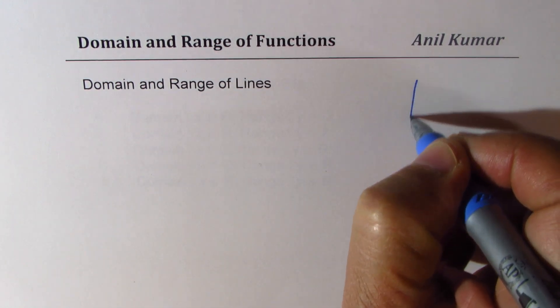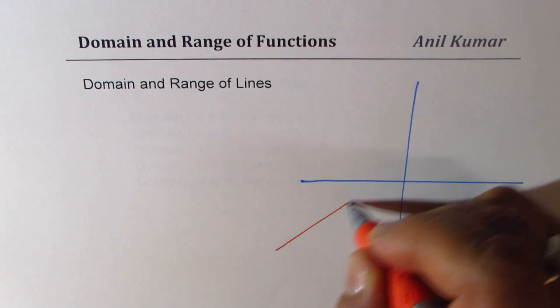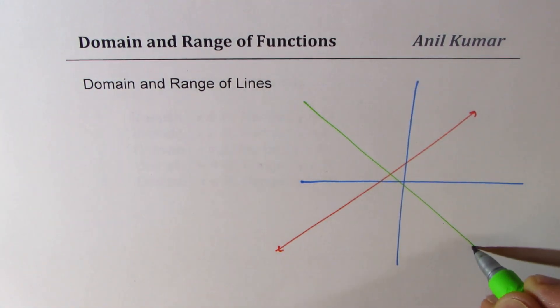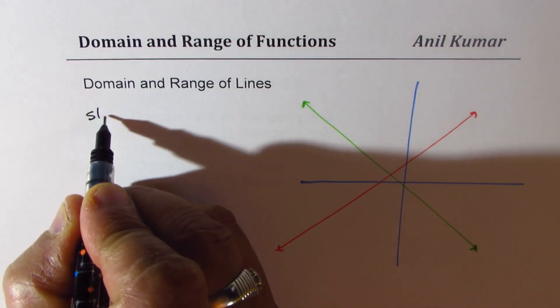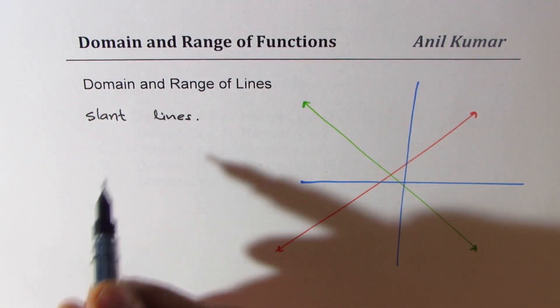Normally when we talk about lines, we are saying lines which are kind of like this. This could be a line which extends from one quadrant diagonally across with increasing slope, or we talk about lines which are falling with decreasing slope. Now these lines can be treated as slant lines.